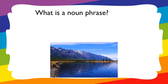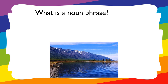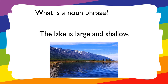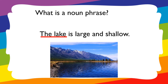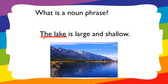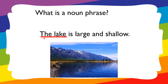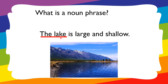Now what is a noun phrase? Phrases are a group of words used to form parts of a sentence. Always remember: a phrase is not a sentence. In the sentence 'The lake is large and shallow,' the noun phrase is 'the lake.' Here we have 'the,' which is an article or a modifier. They appear before a noun or noun phrases, and just like adjectives, they help to clarify the meaning of the noun in your sentence. The noun here is 'lake.'